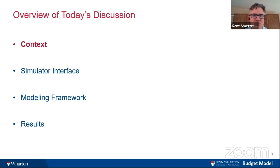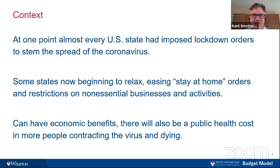Let me provide first an overview of today's discussion. At one point most states in the United States imposed some type of lockdown orders to stem the spread of coronavirus. These varied in different forms, from stay-at-home orders to a little bit less imposing than that. Now some states are starting to relax some of those orders and considering whether to relax stay-at-home orders and other restrictions on non-essential businesses and activities. These can have economic benefits, but there will also be public health costs associated with relaxation, because reduction in social distancing means the virus can spread, resulting in more cases and more deaths.